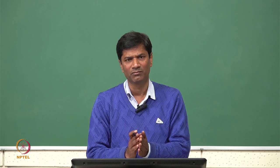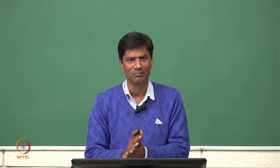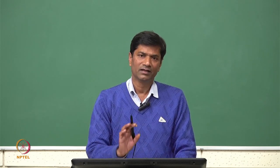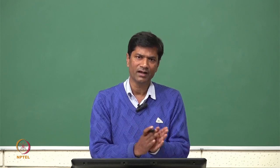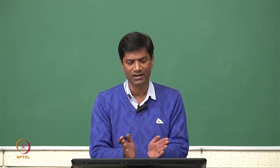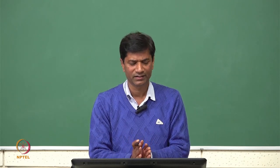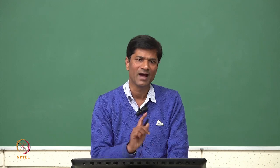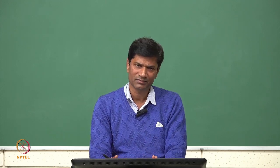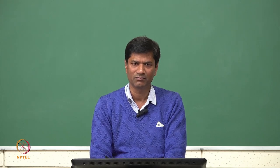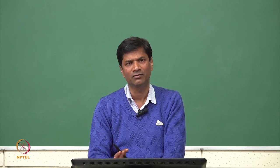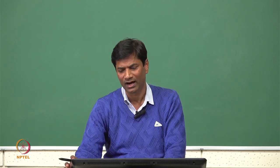From the Chemical Abstracts index, Lotka took alphabets A and B and counted the number of publications — listing the number of publications 1, 2, 3, 4 and so on. He treated letter A and letter B both separately and in aggregate, and while formulating this law, Lotka omitted the names of funds. He took the 10-year Chemical Abstracts index of 1907 to 1916 and counted and listed publications under alphabets A and B.